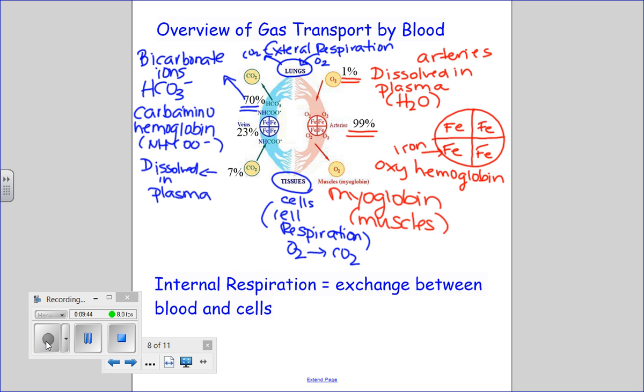Bicarbonate ions are the result of CO2 reacting with water. And since your blood is made up of a bunch of water, this makes total sense. CO2 reacts with water and you end up getting a bicarbonate ion. And that's how the majority of carbon dioxide is transported, is in the form of that ion.